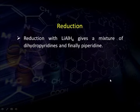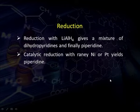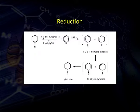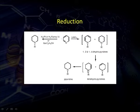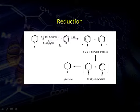Besides electrophilic and nucleophilic substitution reactions, pyridine also gives reduction and oxidation reactions. For reduction: different reducing agents give different products. When pyridine is reduced with lithium aluminium hydride, it gives a mixture of mono-, di-, and tri-reduced compounds — that is, 1,2- or 1,4-dihydropyridine, which is further reduced to tetrahydropyridine, and then further reduced to hexahydropyridine, or piperidine. However, when reduced with a strong reducing agent such as hydrogen over a platinum or Raney nickel catalyst, or with sodium and ethanol, it is directly reduced to piperidine — that is, complete reduction of pyridine takes place.